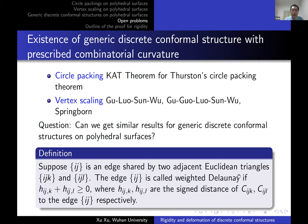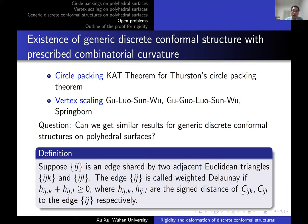The second open problem is the existence of generic discrete conformal structures with prescribed combinatorial curvature. For circle packing we have the Koebe-Andreev-Thurston theorem; for vertex scaling, we have discrete uniformization, belonging to Gu-Luo-Sun-Wu for the Euclidean case and Gu-Guo-Luo-Sun for the hyperbolic version. Recently, Springborn also obtained results on uniformization of vertex scaling. As a generalization, can we get similar results for generic discrete conformal structures on polyhedral surfaces?